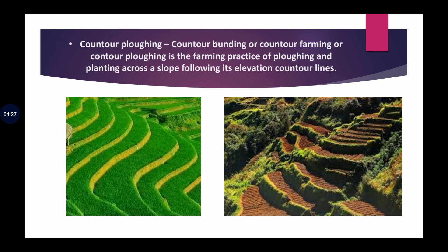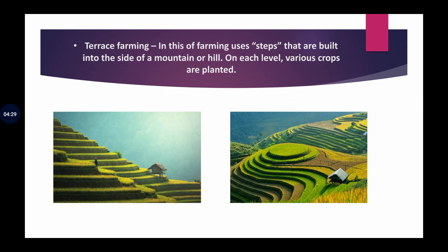Next is terrace farming. This is also done in hilly areas. We can also call it seedhi numa khet — jaise steps bani hoti hain, seedhiyaan bani hoti hain. Usi tarah ke broad steps bana kar hills par kheti karne se soil erosion ko roka ja sakta hai.